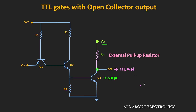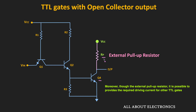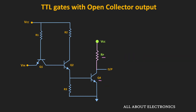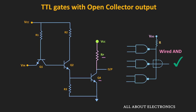In the logic high condition, the output will also be close to VCC. The pull-up resistor is needed because when Q4 is OFF, the collector voltage alone would not be sufficient to be considered logic high. With this external pull-up resistor, it is possible to perform wired-AND logic. When we connect the outputs of open collector gates together, the overall output is the logical AND of all outputs — if any one output is low, the overall output is logic low; it is high only when all outputs are high.